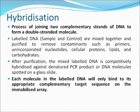The next major step is hybridization. It is a process where two complementary strands of DNA are joined to form a double-stranded molecule. Labelled DNA is then mixed together and purified to remove contaminants such as primers. After being purified, the mixed labelled DNA is competitively hybridized against denatured PCR product or DNA molecules spotted on a glass slide. Each molecule in the labelled DNA will only bind to its appropriate complementary target sequence on the immobilized array.